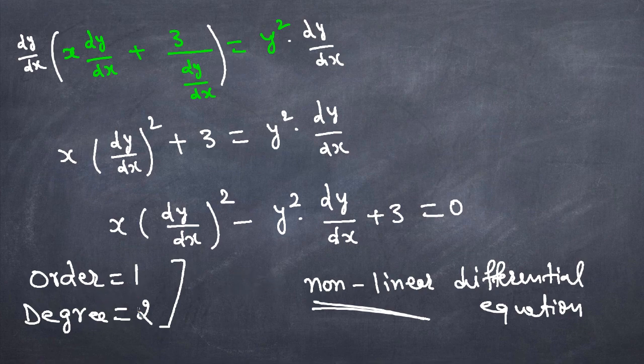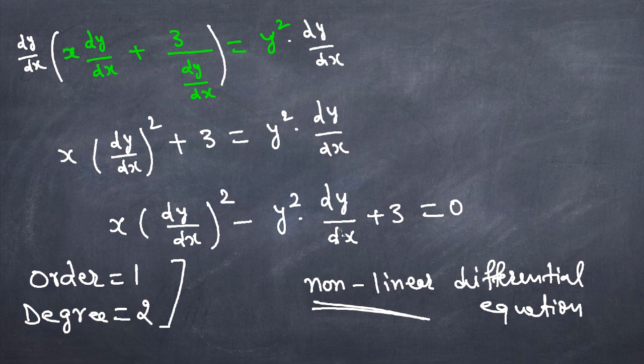If the degree was 1 and the function or its derivatives were not multiplied together, then it would be a linear differential equation. I hope this explains the difference between linear and nonlinear differential equations and how to find the order and degree. I'll make another video with more examples. Thank you for watching — please share with your friends and subscribe to the channel. Have a good day!